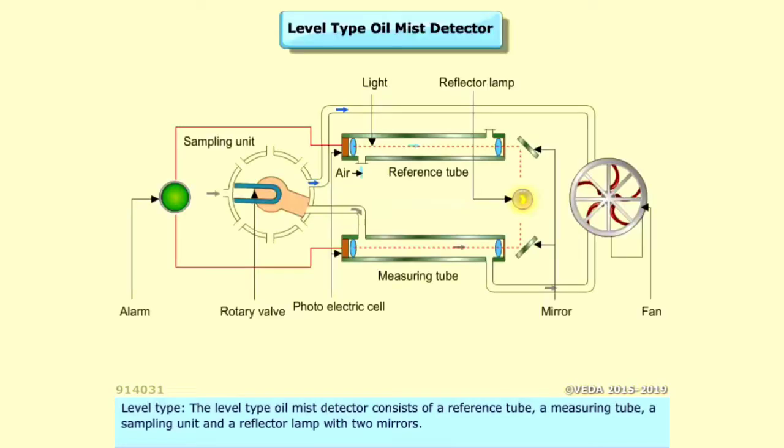The Level Type Oil Mist Detector consists of a reference tube, a measuring tube, a sampling unit, and a reflector lamp with two mirrors.